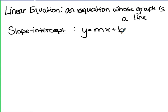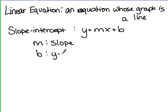It's called slope intercept form because it represents, first of all, the slope of the line, which is represented by the letter m. And it also represents the y-intercept, which is b. The y-intercept is the place where the line crosses the y-axis.